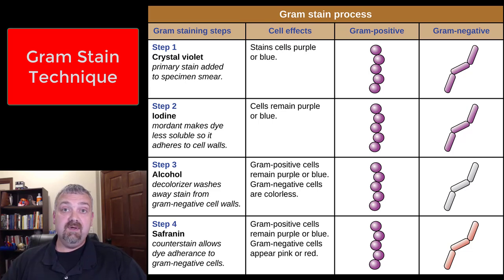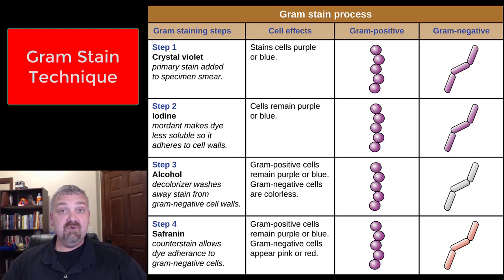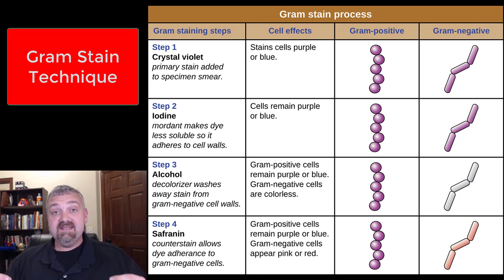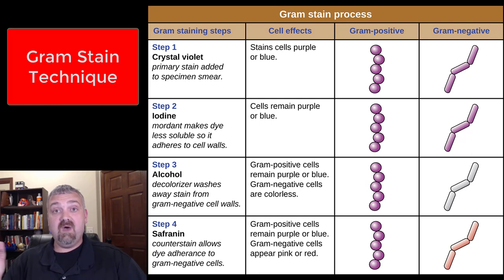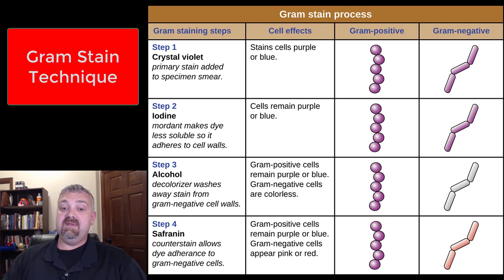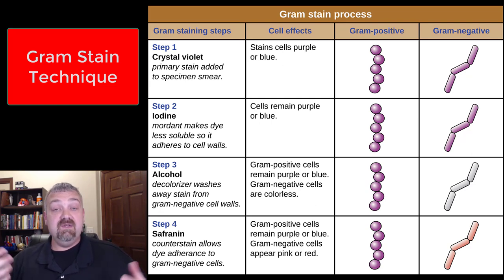The third step is the Gram's decolorizer. This is the most important step in the Gram stain. This is truly where gram positive cells show themselves as gram positive and gram negative cells show themselves as gram negative — that's why the decolorizing step is the most important step. We use Gram's decolorizer, which is alcohol.